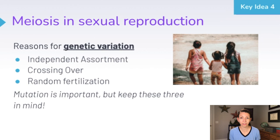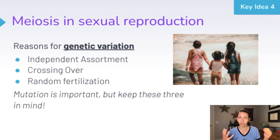We can get lots of genetic variation through meiosis — through independent assortment of chromosomes, crossing over of chromosomes during prophase one of meiosis, and the random fertilization of one egg cell with any one sperm cell. Mutation is also an important source of genetic variation, but these three reasons are very important as well.